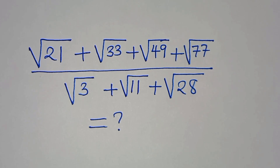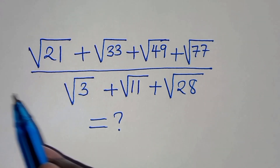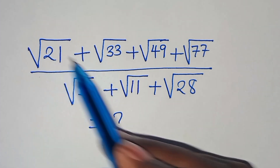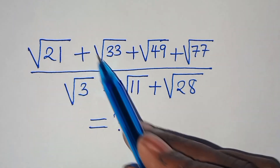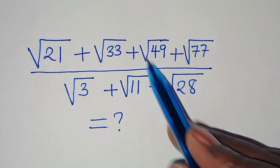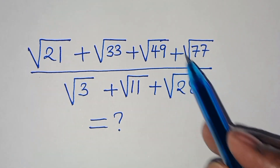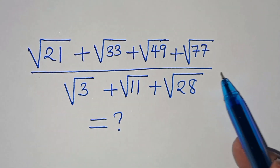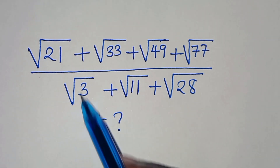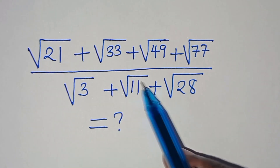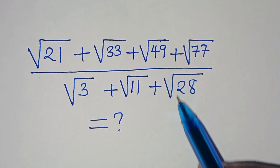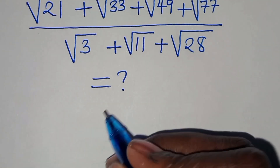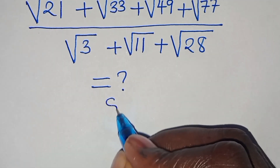Hello everyone, you are welcome to solve this nice square root math problem, which is the square root of 21 plus square root of 33 plus square root of 49 plus square root of 77, divided by square root of 3 plus square root of 11 plus square root of 28. So let's provide a solution from here.